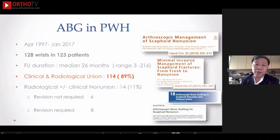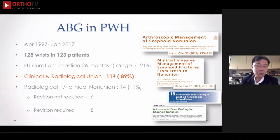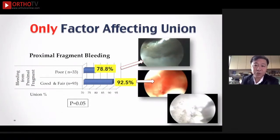The arthroscopic bone graft concept, I believe, started in my hospital back in 1997. In the first 20 years, we managed around 128 wrists with a median follow-up of 26 months, achieving an overall union rate of about 89%. Like every series, there are still some failures, but not all cases require revision surgery. We tried to analyze different factors affecting union, and ultimately only one factor matters: the proximal fragment bleeding. If intraoperatively you see poor bleeding, no matter how much we deploy, we have less chance of union, still around 80%, but if you see nice bleeding from the proximal pole, you have over 90% union chance.